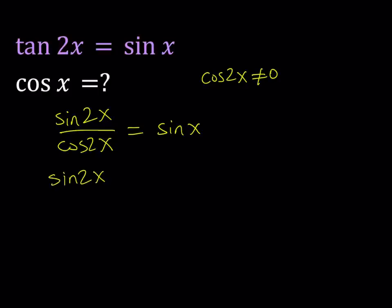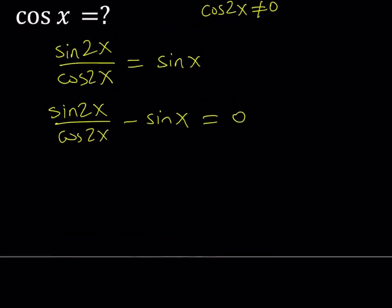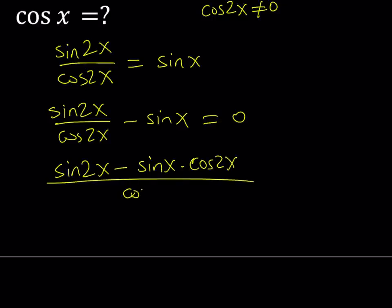Let's go ahead and do it. Sin 2x over cosine 2x minus sin x is equal to 0. And we're going to be solving this equation, not necessarily for x, but from here we need to find cosine of x. Let's see how we can do it. I want to make a common denominator. That makes sense, doesn't it? If you do, you're going to get sin 2x minus sin x multiplied by cosine of 2x and all of that is divided by cosine of 2x and that is equal to 0.